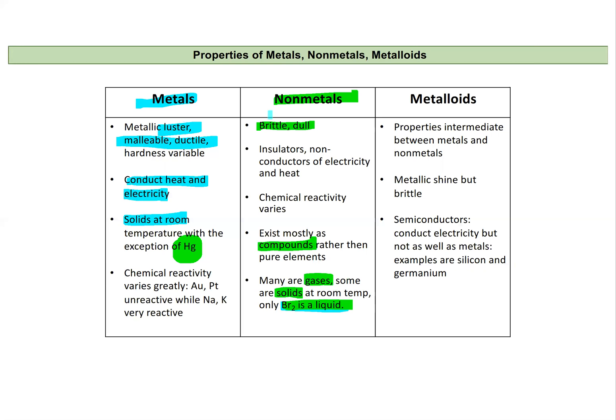So then in between these two we've got our metalloids on the staircase. And their properties kind of go in between metals and nonmetals. So they're shiny, but they are brittle. They're semiconductors. So they'll conduct electricity, but not as well as a metal. Some great examples of this are silicon and germanium.